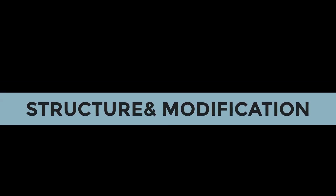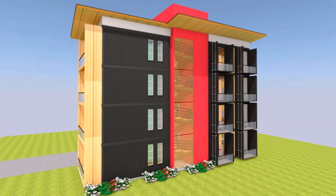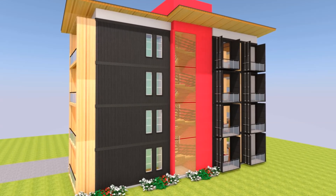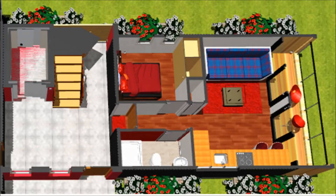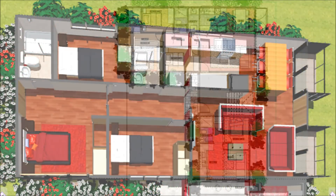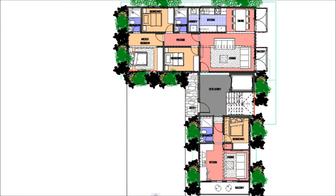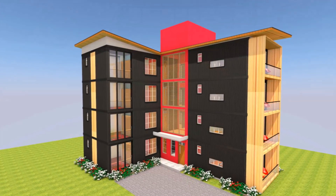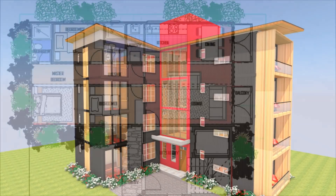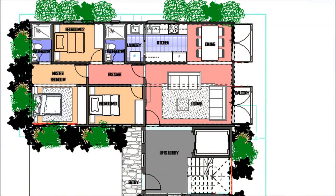Structure and modification: this modern shipping container apartment block is formed by combining a one-bedroom housing unit plus a three-bedroom housing unit joined together at the circulation shaft. The three-bedroom housing unit is designed using two 40-foot shipping containers placed in parallel to each other with a one-metre gap in between to increase the floor area of the habitable space.